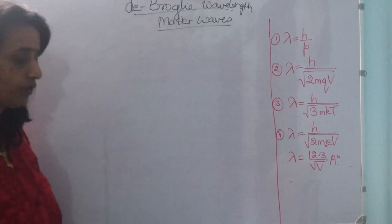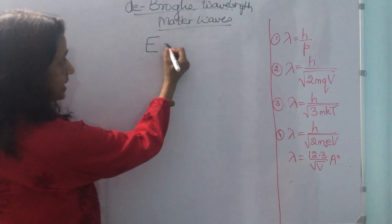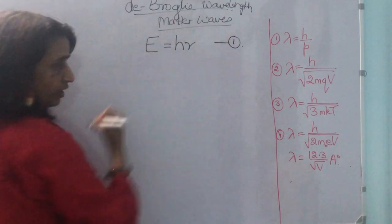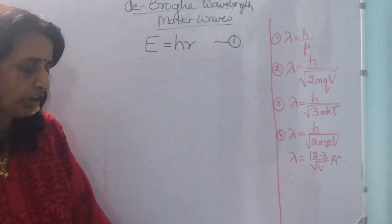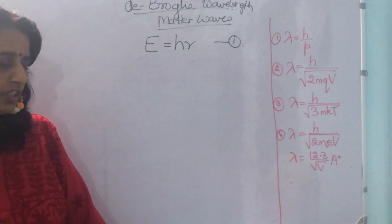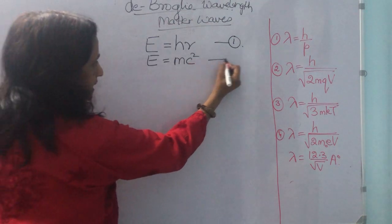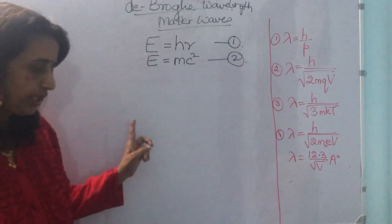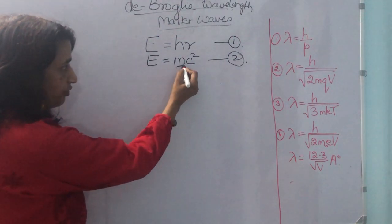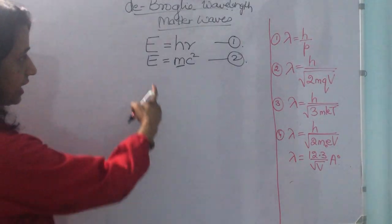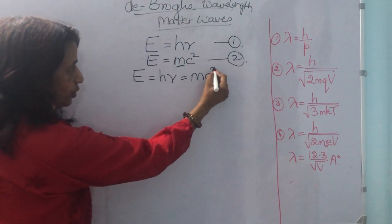We know that a light wave of frequency mu is associated with a photon of energy E. So E is equal to h mu, where mu is frequency and h is Planck's constant. From Einstein's theory of relativity, a particle of mass m is equivalent to energy E as E = mc². De Broglie assumed that the photon of energy mu is moving with certain velocity, and we compare these equations: E = h mu = mc².